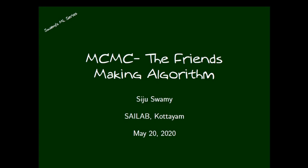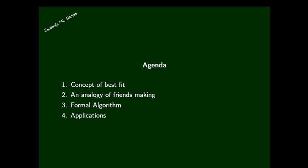Good morning everyone. Today we are going to discuss one of the interesting algorithms in probabilistic machine learning known as Monte Carlo Markov Chain. This algorithm is also known as the friends-making algorithm — an analogy used to understand some mathematical ideas behind MCMC. In this session we are going to discuss four important points related to MCMC: the concept of best fit, the friends-making analogy, the formal algorithm, and applications in Bayesian learning.